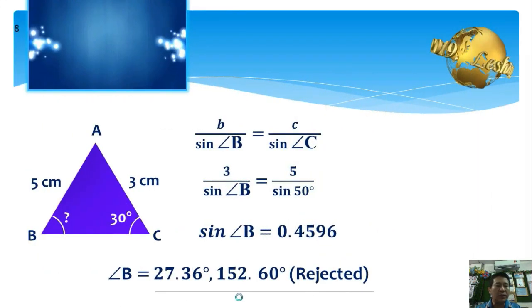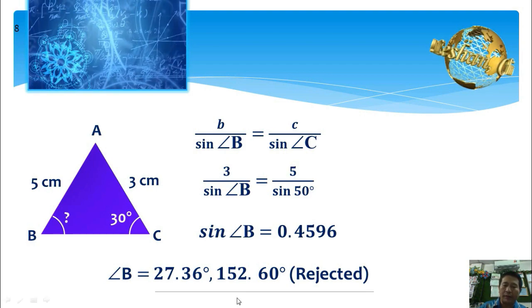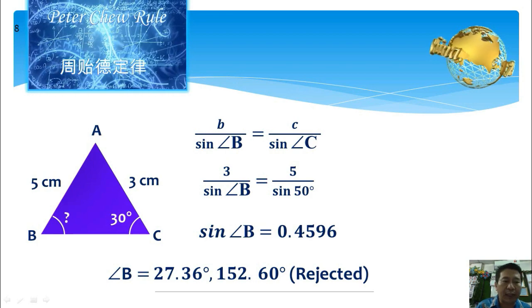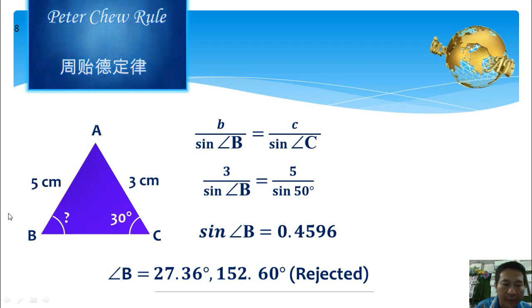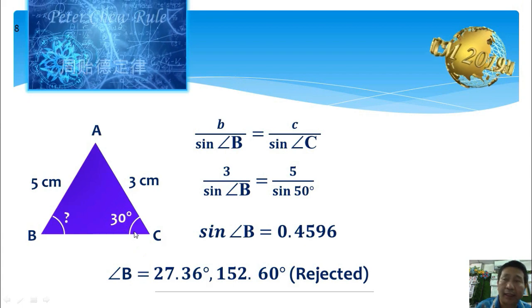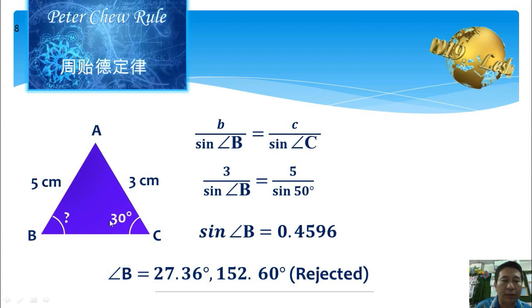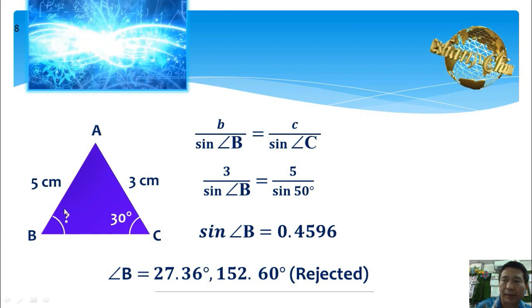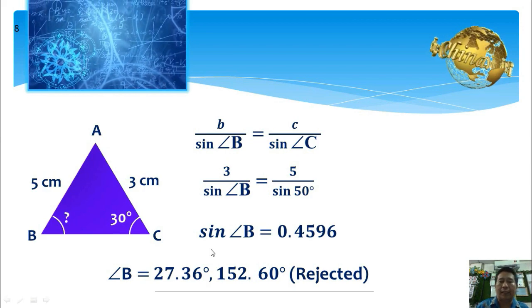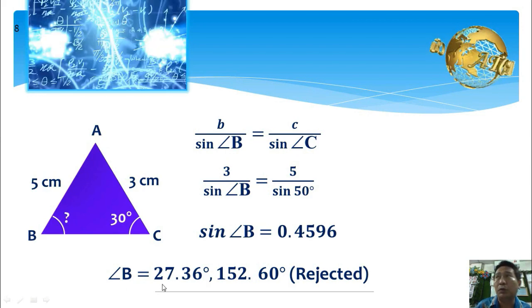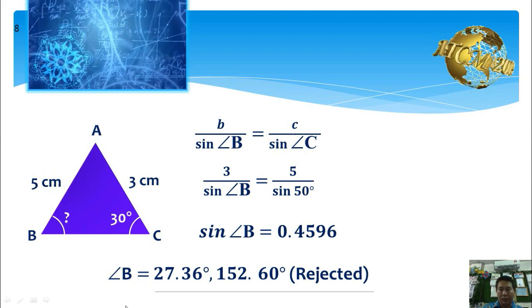Moreover, when we know two sides and a non-included angle, we can use the sine rule to find the non-included angle. When we are given two sides and the angle C as a non-included angle, we can also use the sine rule to find another non-included angle B. Here we can find that angle B is equal to 27.36 degrees.